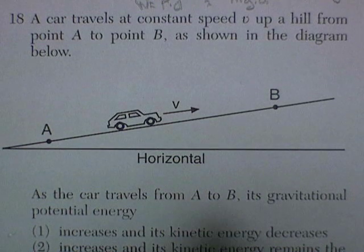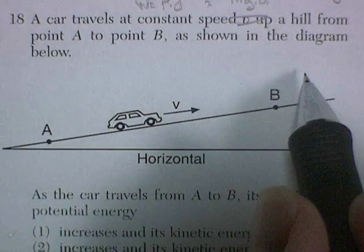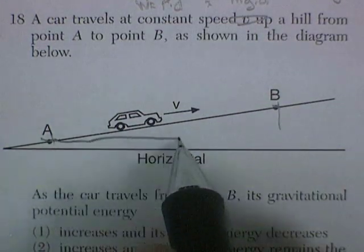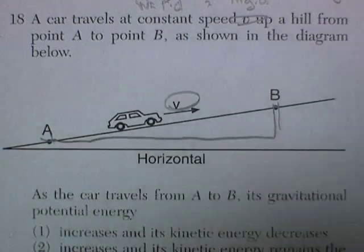Question 16, a car travels at a constant speed, V, up a hill from point A to point B. It's rising up in the air a certain distance, but traveling at a constant speed.